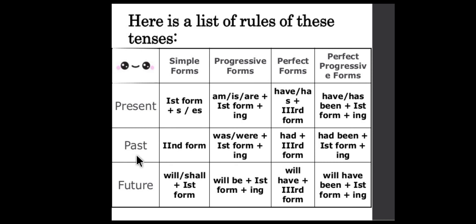Rules for past tense — simple form: second form. Continuous or progressive: was/were plus first form plus ING. Perfect form: had plus third form. Perfect progressive: had been plus first form plus ING. Future tense: will/shall plus first form. Future continuous: will be plus first form plus ING. Perfect form: will have plus third form. Perfect progressive: will have been plus first form plus ING.